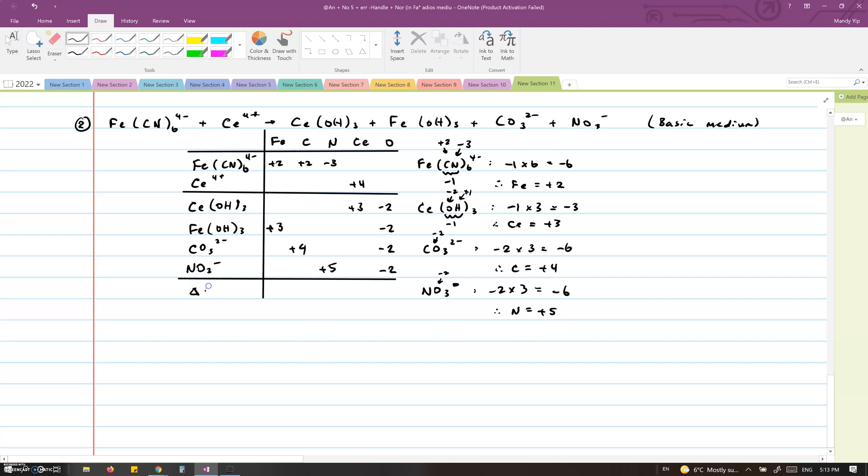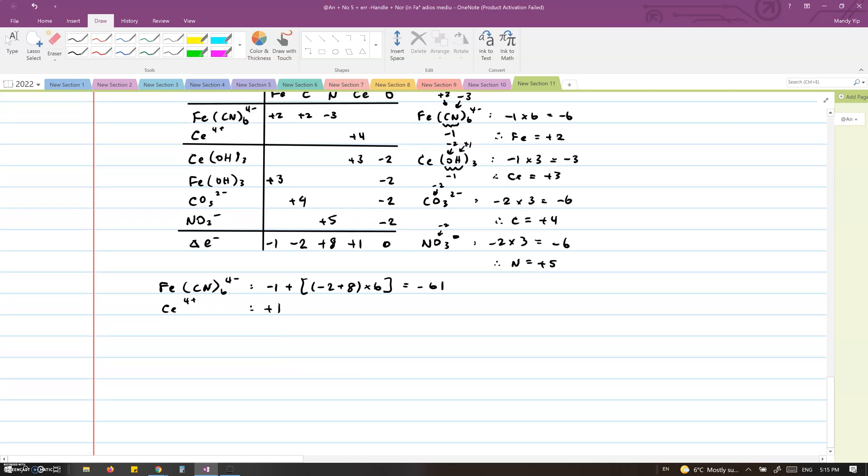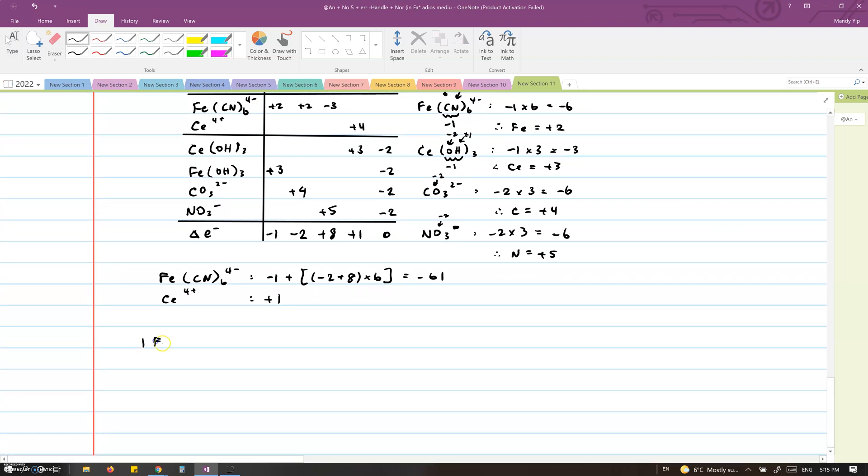And we will write out the change in the electron count for each element. Then we will rewrite the reactions so that we can tally up the total change in the electron count for each reactant. So Fe is plus 1, while C is minus 2, and N is plus 8. And we have 6 sets of CN. So we will multiply this whole thing by 6. This gives us minus 61. Ce is just plus 1.